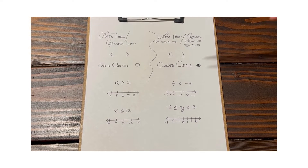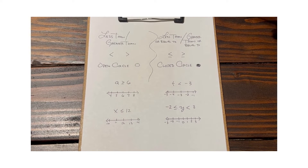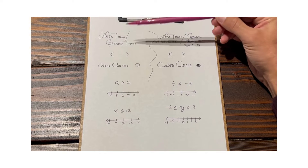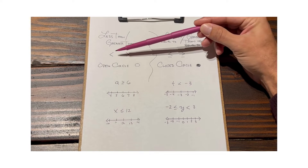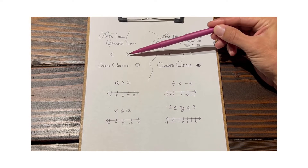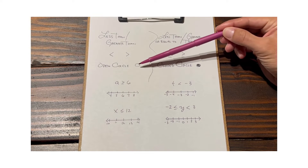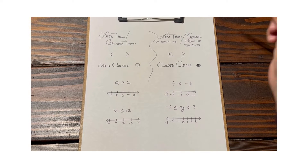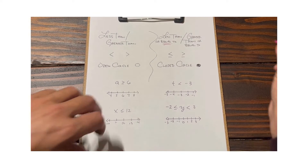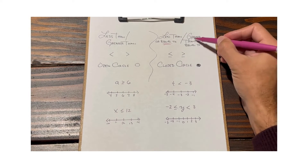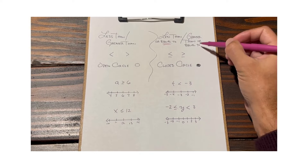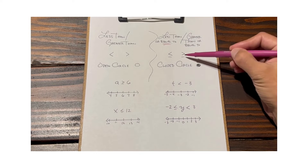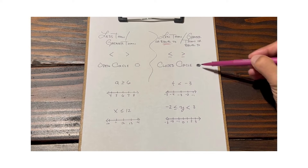The rule is very simple. If the inequality sign is a less than or greater than sign, you use an open circle. If it's a less than or equal to sign — keyword: or equal to — or a greater than or equal to sign, then you use a closed circle.